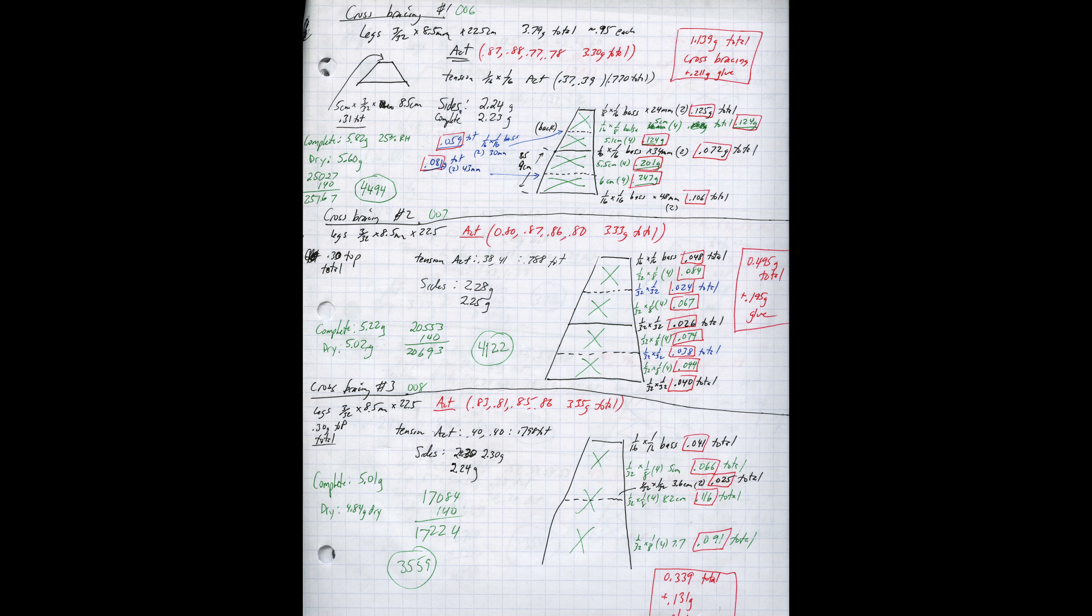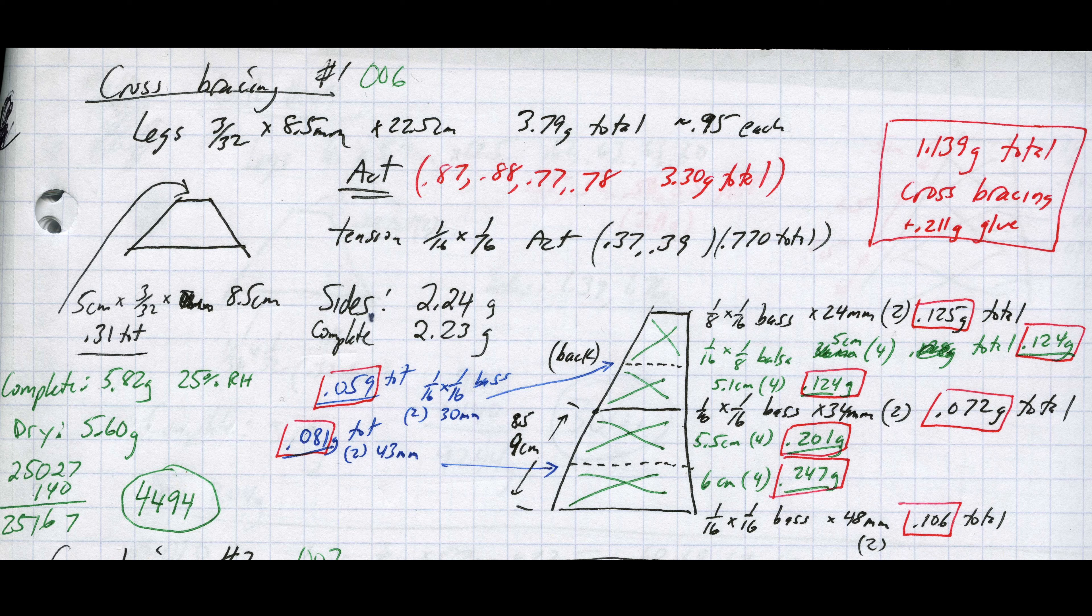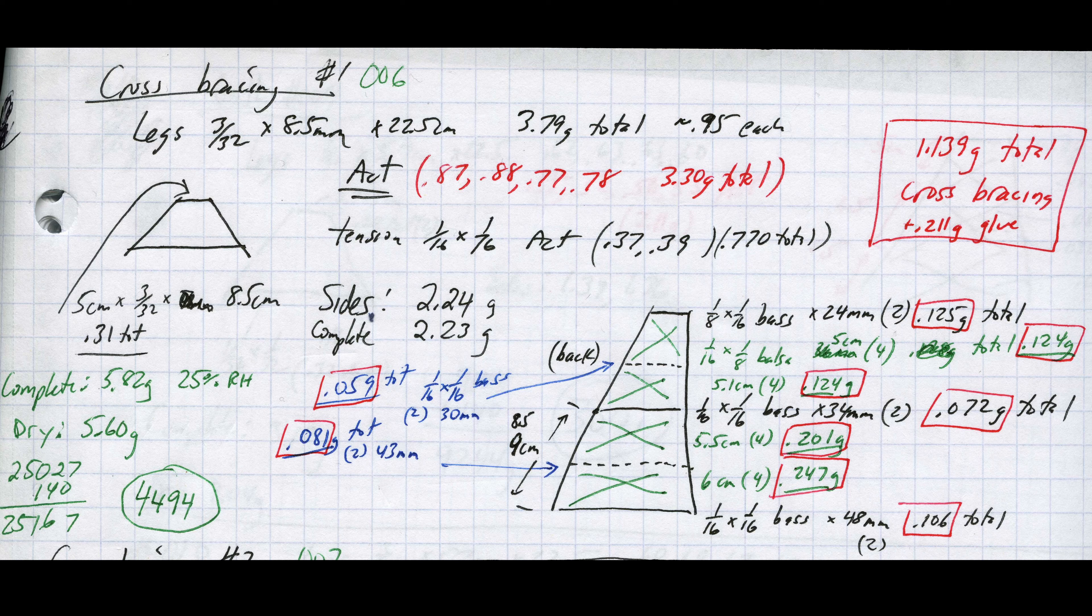Before I talk about the results I want to show the build notes in more detail. Because the sides of all three of these builds are essentially identical I'm going to focus only on the cross bracing part of the notes. The first thing that is important to document is the design itself. Here I use a rough sketch of the end view to show the design.